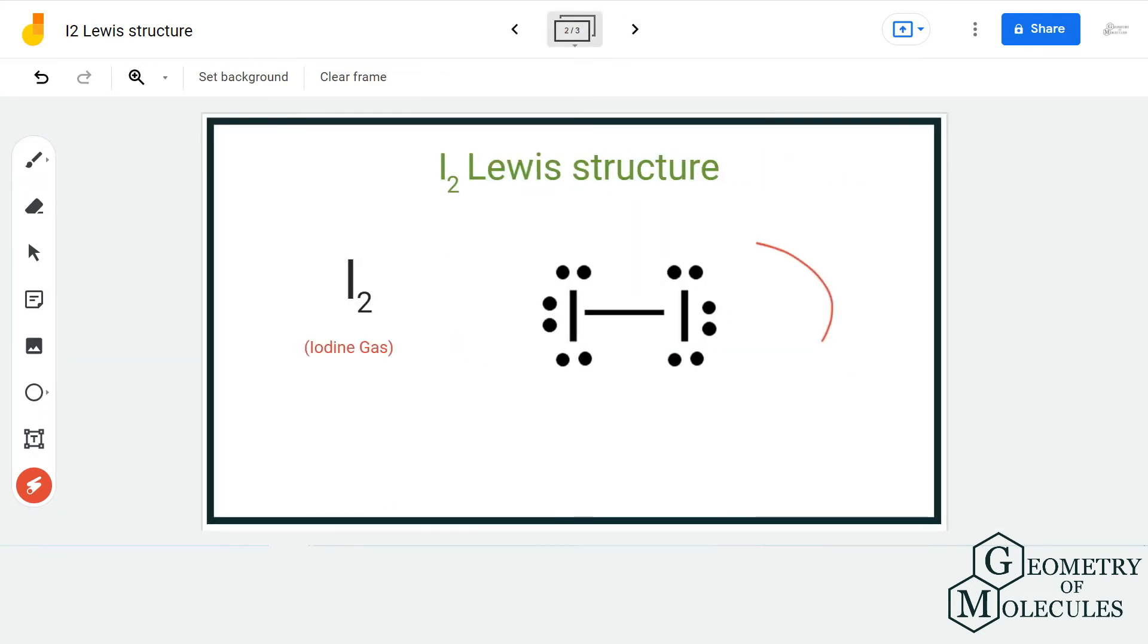And now this is the Lewis structure of I2 gas, in which there is one single bond formed between two iodine atoms and both these atoms have complete octets.